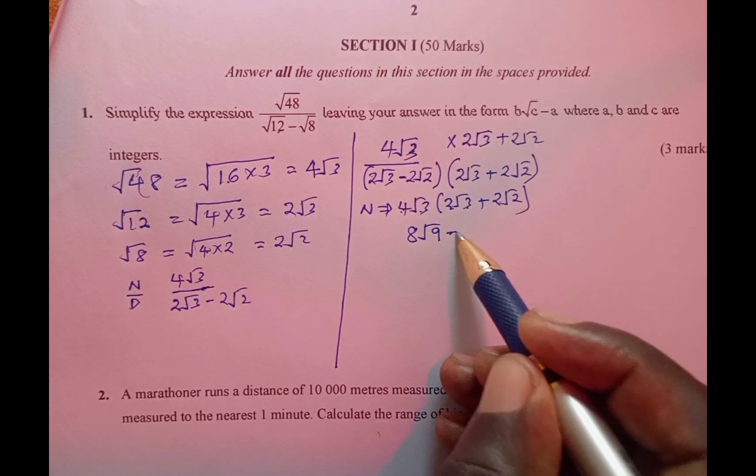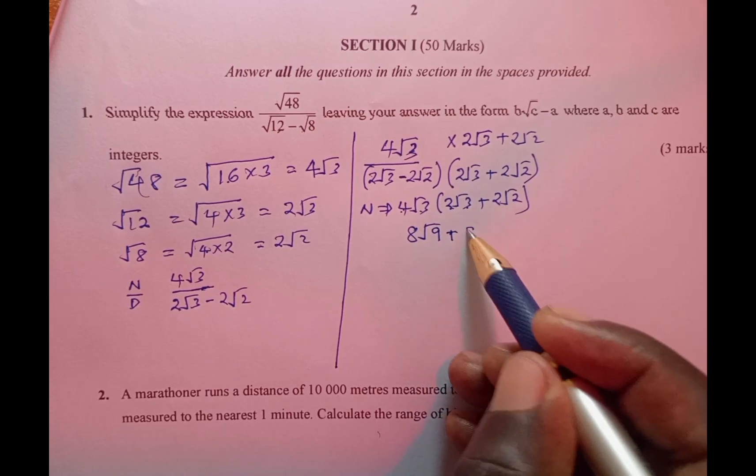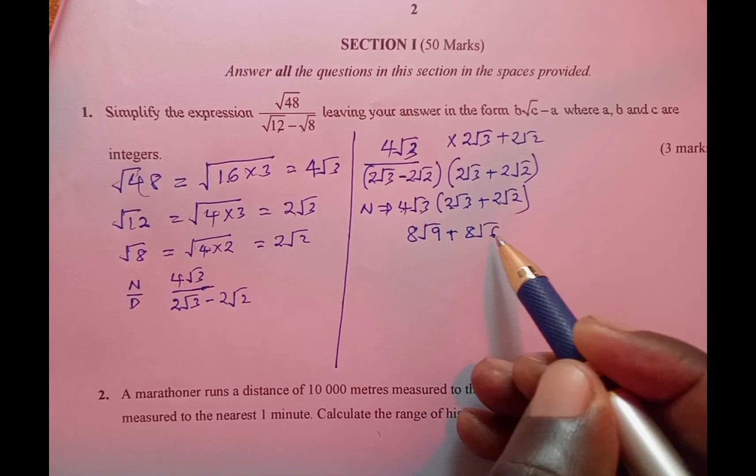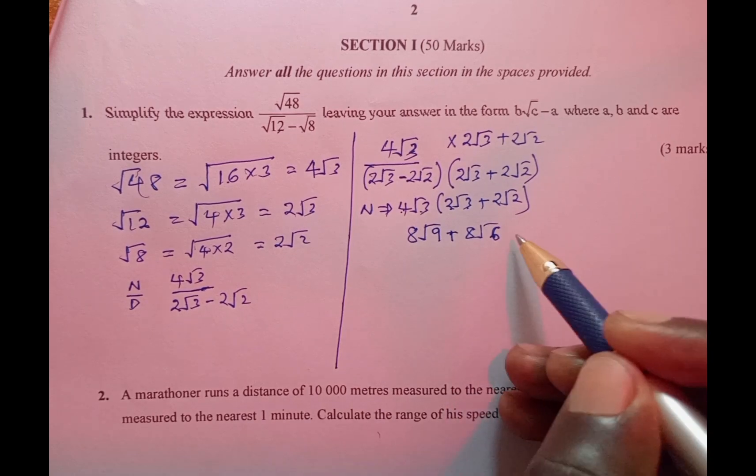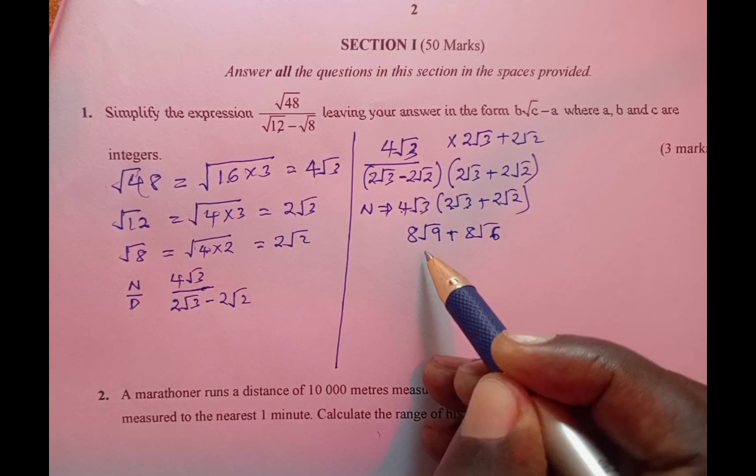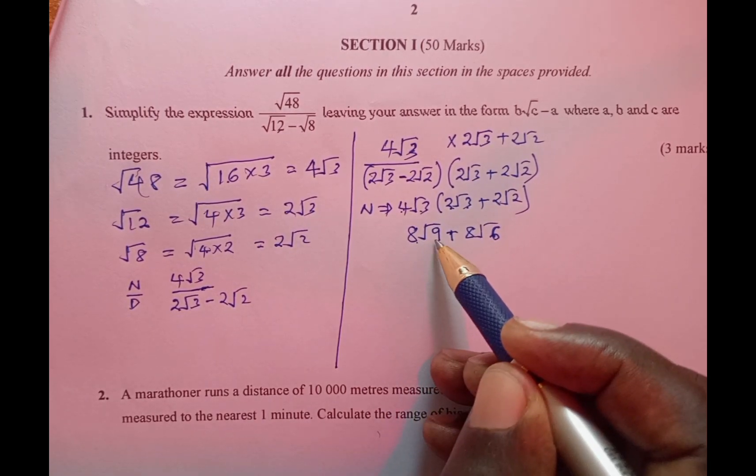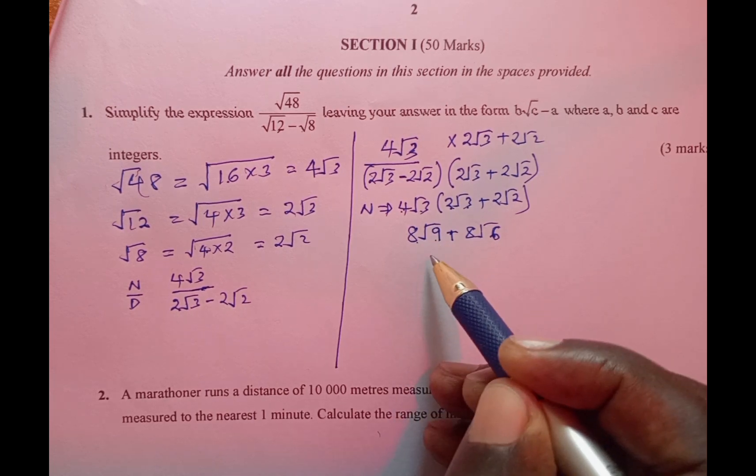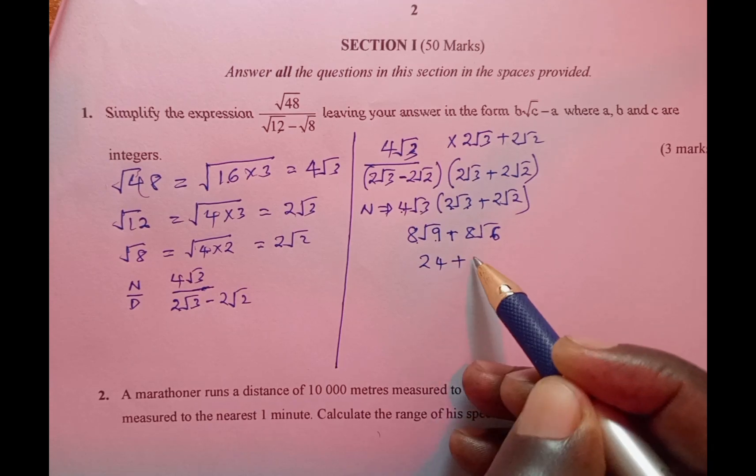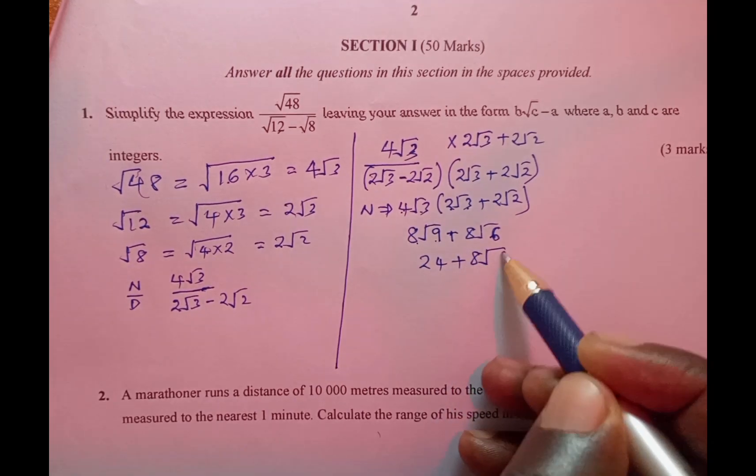This will simplify as 8 multiplied by √9, which is 3, times 8, giving us 24 plus 8√6. We are done with the numerator.